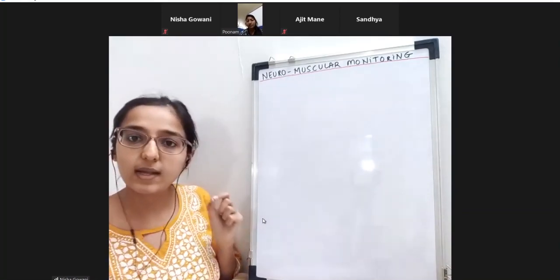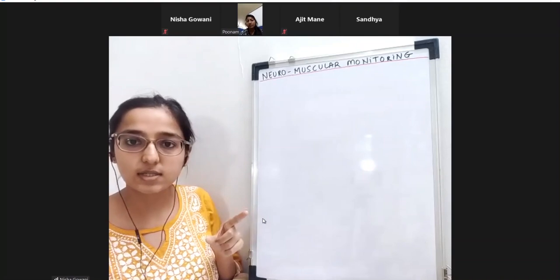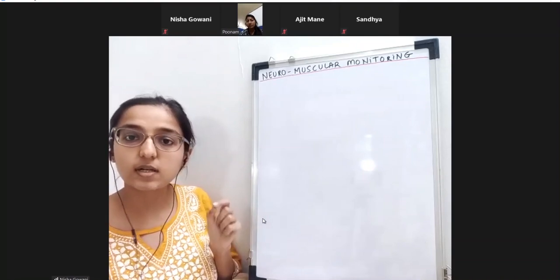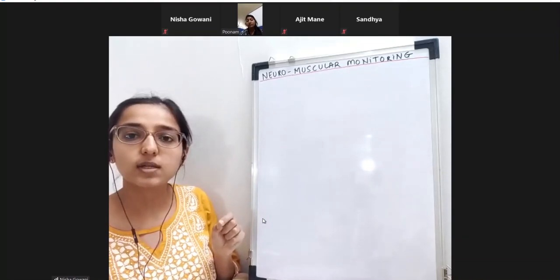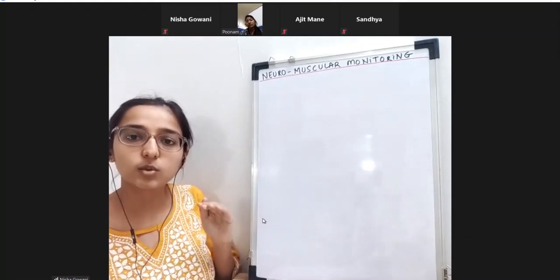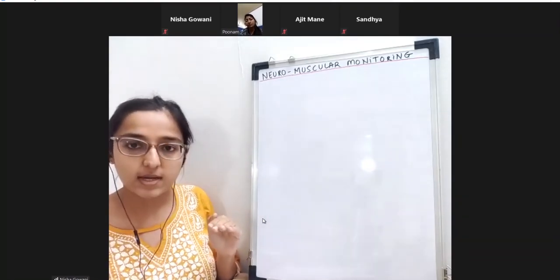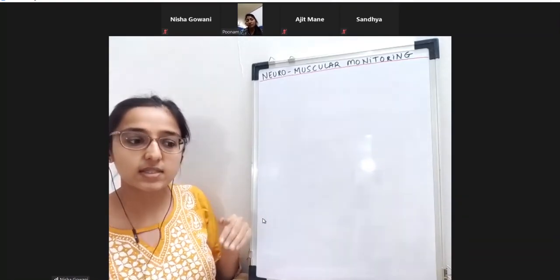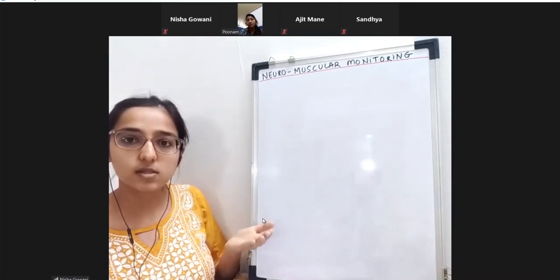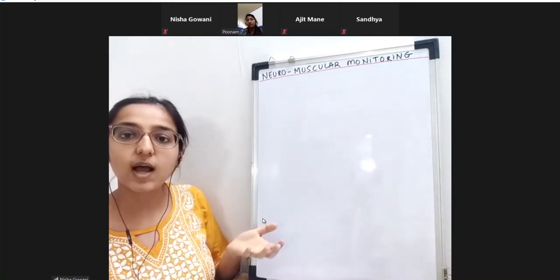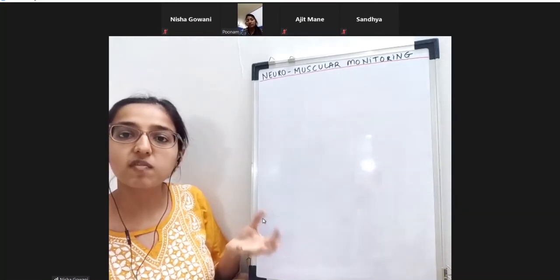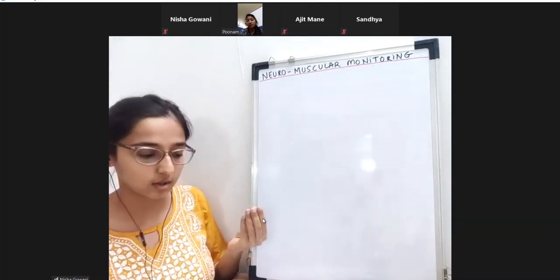What do we do? An electrical stimulus is delivered to the nerve, and then we see the response, which will occur in the form of muscle contraction.